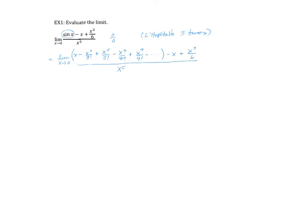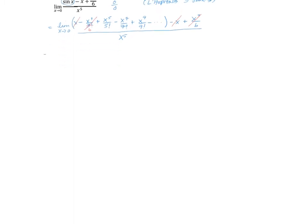What you should notice is the first term x will cancel with the minus x outside the parentheses. And the second term, minus x³ over 3! is simply over 6, so the minus x³ over 6 cancels with the plus x³ over 6 on the outside. Rewriting this limit as x goes to 0, it becomes x⁵ over 5! minus x⁷ over 7! plus x⁹ over 9! minus, and so on — and the rest is gone.